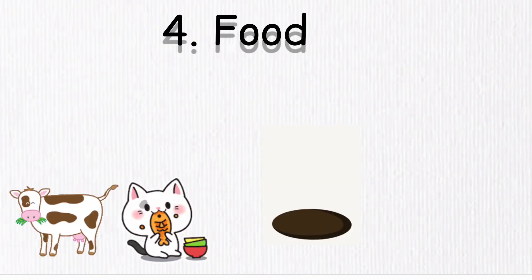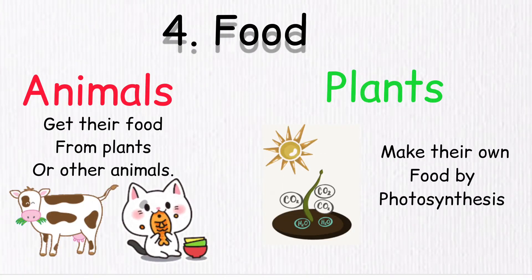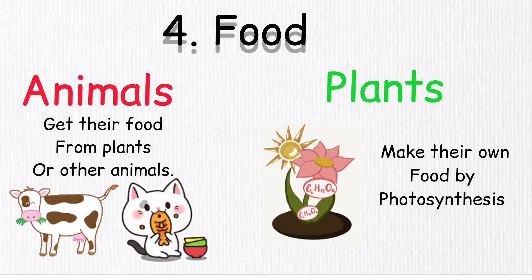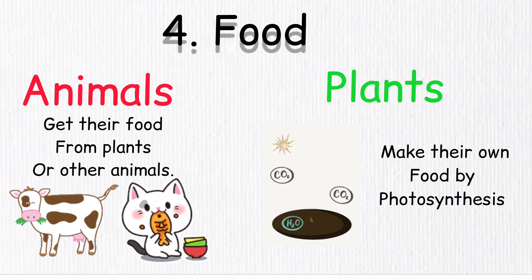Number 4 is about food. Animals get their food from plants or other animals, while plants make their own food by a process called photosynthesis.